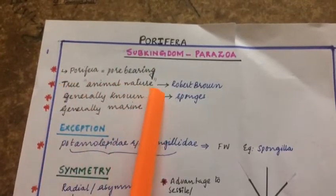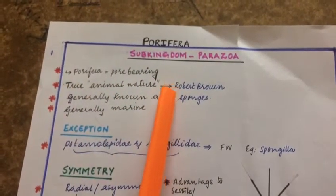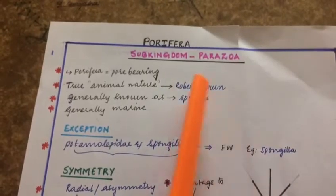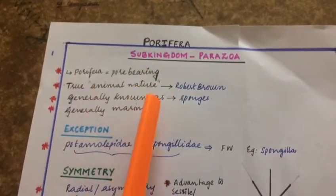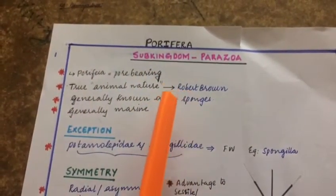The true animal nature of Porifera was given by Robert Brown. Generally, they are known as sponges and they are mostly marine.